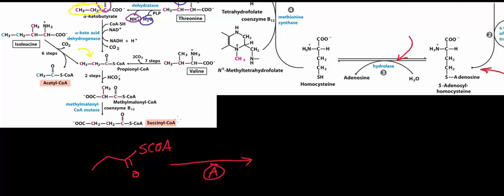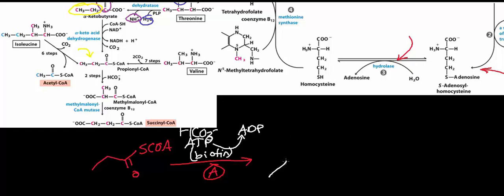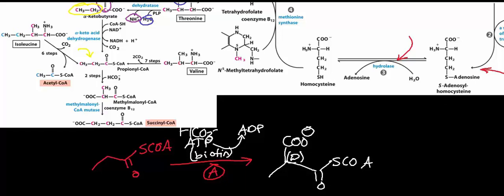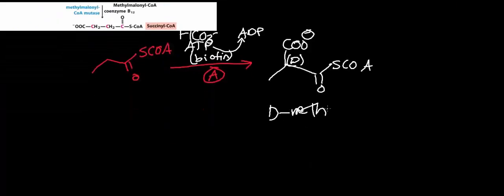Propionyl-CoA carboxylase is an ATP-dependent, biotin-dependent carboxylase. It is also bicarbonate-dependent and consumes ATP, so you also expect to get ADP out. The reaction carboxylates propionyl-CoA at a specific carbon, and you specifically get the D-isomer of the product, which is called D-methylmalonyl-CoA.